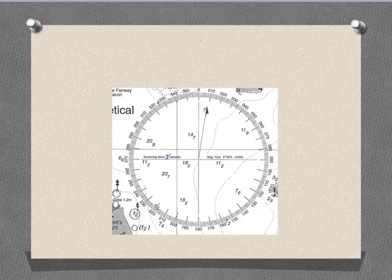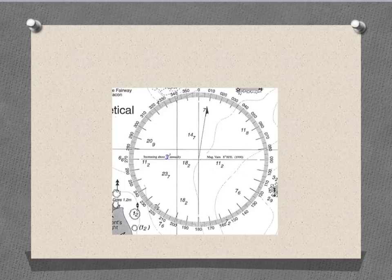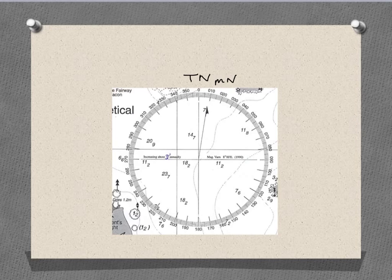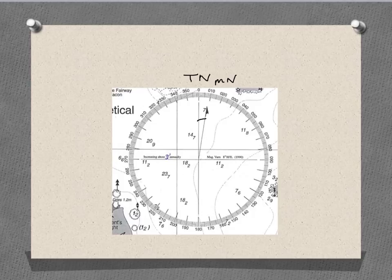The next slide shows us the compass rose found on the map of Hypothetical Bay, the map you are to use in your assignment. The compass rose reveals a number of things about the magnetic variation in this region. Firstly, 0 degrees at the top of the compass rose indicates true north. Where the arrow is pointing will give us magnetic north. We can see that the angle between true north and magnetic north — in other words, the magnetic variation — is 8 degrees east. This information is also confirmed by the information in the centre of the compass rose.